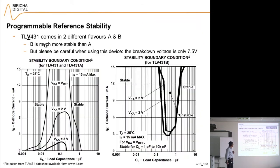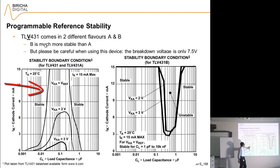LMV431 is very similar. Then there is another device with very similar characteristics, TLV431, and that comes in two different flavors, type A and type B. Type B is much more stable than type A. This is the curve for type A, and this is the curve for type B. These are available in the datasheet. The stable region for this one is actually much, much wider, so you are less likely to go unstable. But with this device please be careful, because the breakdown voltage is only 7.5 volts.